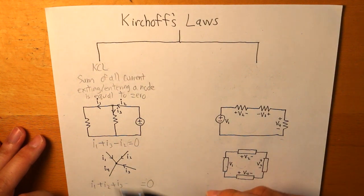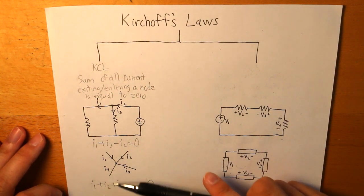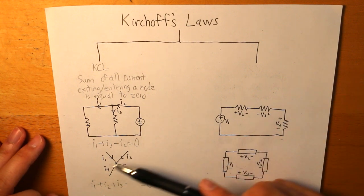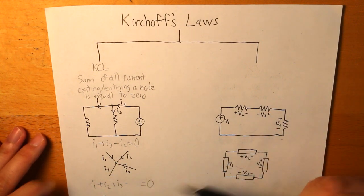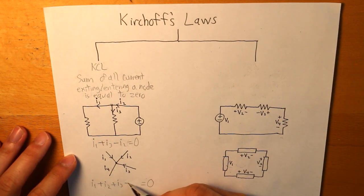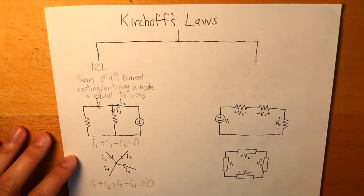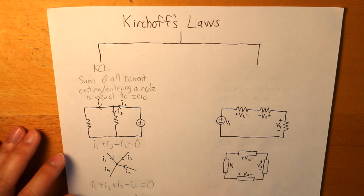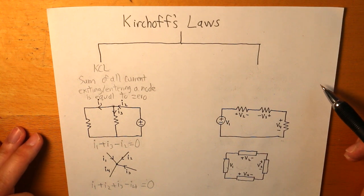It has to be facing the direction where it is leaving that node because all three other currents are entering it. Therefore it has to be negative. And there we have what Kirchhoff's current law is.